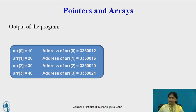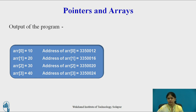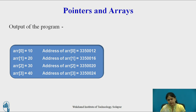This is the output of the program. You can see each element of the array occupies 4 bytes, so each subsequent address is 4 bytes apart from the previous one. For example, addresses like 123500, then 12, then 16, then 20, and so on. Note that these memory addresses may differ every time you run the program.